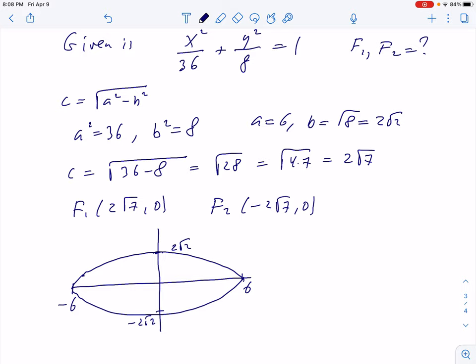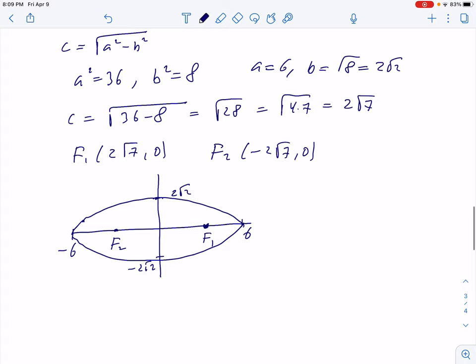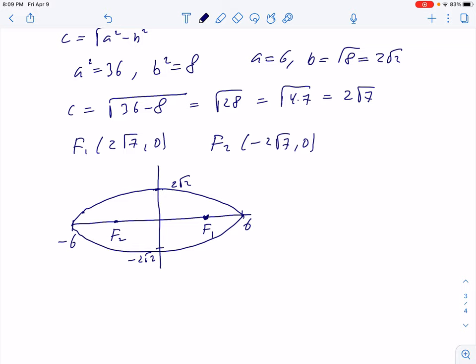And our foci, f1 will be somewhere here. And f2 will be on the other side symmetrically. So we solve this problem. It's an easy problem. You just need to remember the canonical equation, the standard equation, and the formulas for the foci.